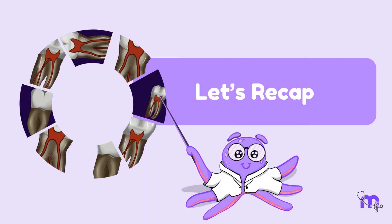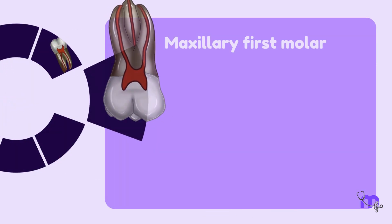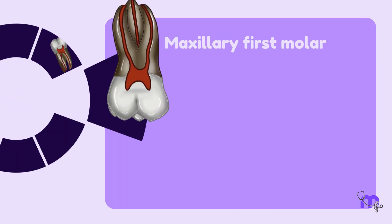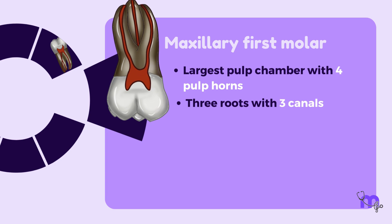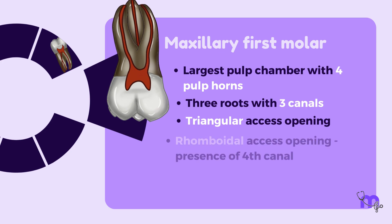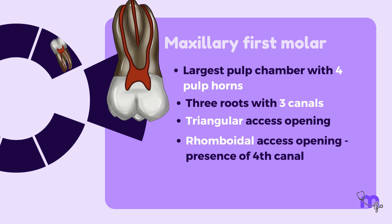Let's recap. Maxillary first molar: largest pulp chamber in the arch with four pulp horns; three roots with a total of three canals; access opening is triangular with rounded corners. If a fourth canal is present, then the shape is rhomboidal.